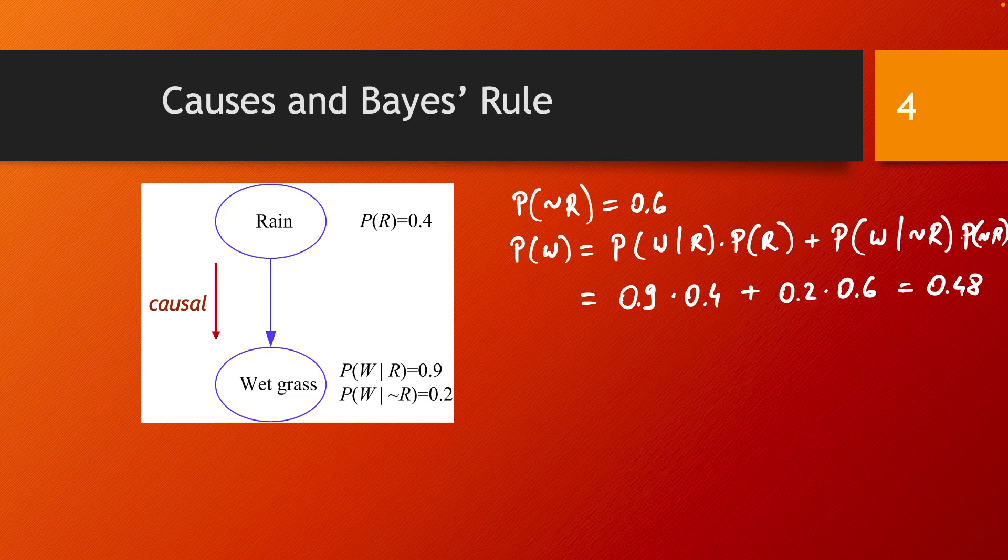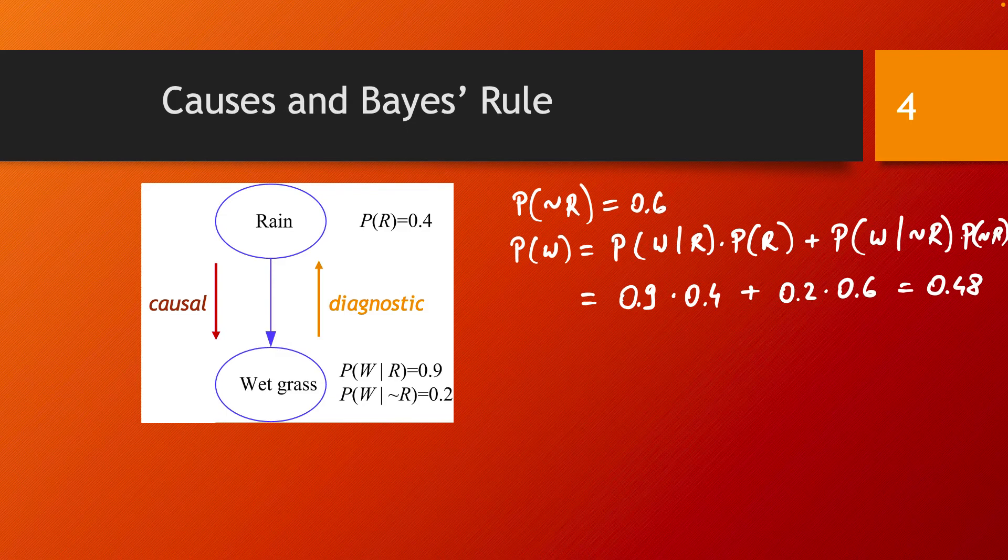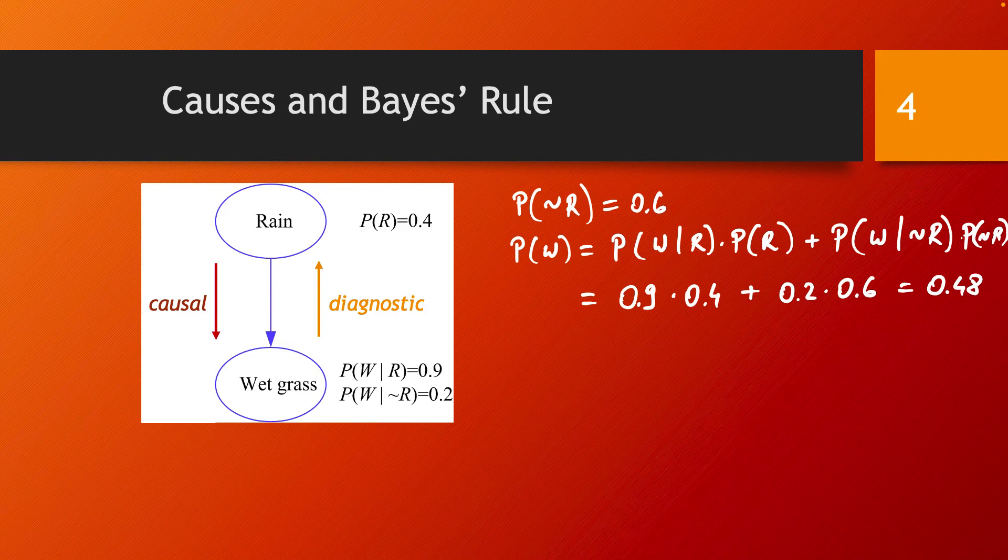This model allows us to do a so-called diagnostic inference. Knowing that the grass is wet, what was the probability that rain is the cause? Remember that there might be at least two causes, maybe even more in other examples, for the grass to get wet. But we can reason about what was the chance that rain was the cause.